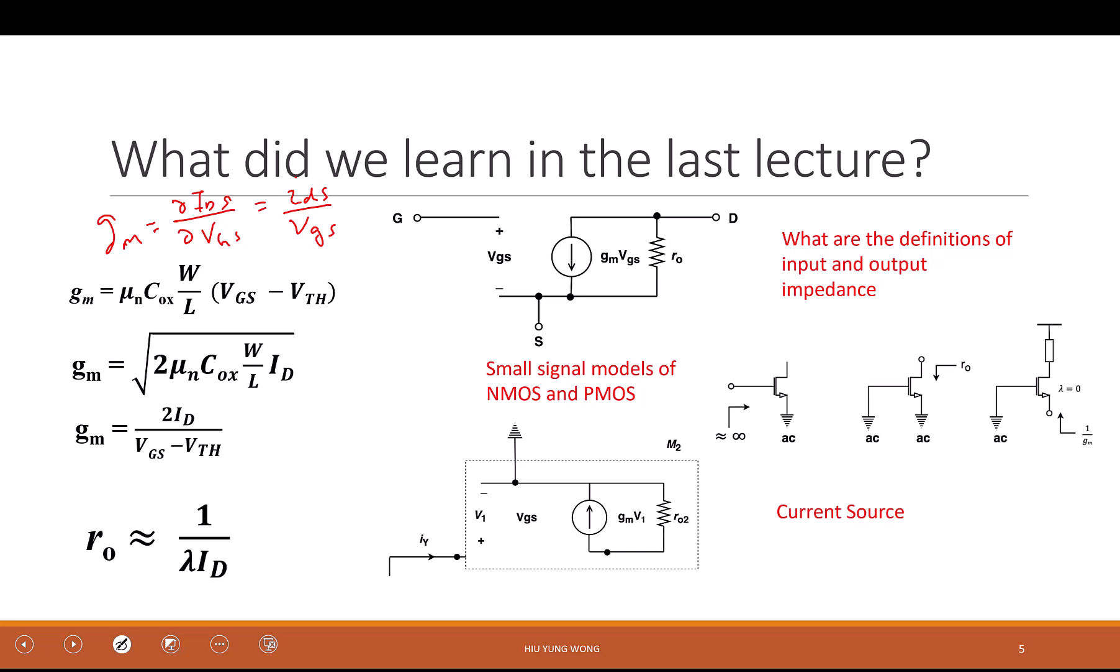This is the definition. We do a partial differentiation over the DC equation. We see that it is proportional to the width, proportional to the DC bias. You drive it harder then it has a higher conductance.